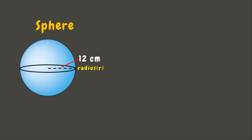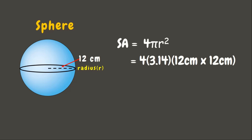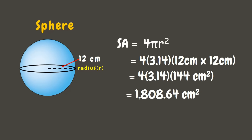Lastly, we have a sphere with a radius of 12 centimeters. To solve for the surface area of a sphere, we use the formula 4πr squared. Let us multiply 4 times pi (3.14) times the square of the radius — 12 centimeters times 12 centimeters, which is 144 square centimeters. So 4 times 3.14 times 144 equals 1808.64 square centimeters. This is the surface area of our sphere. Wonderful!